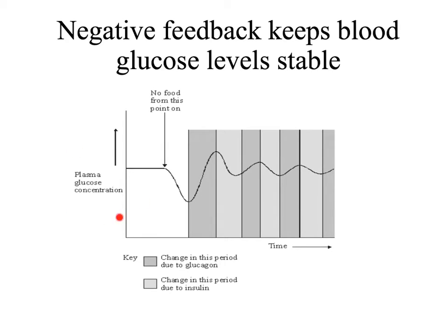If we look at how blood glucose concentration changes during a day, we can see that if blood glucose levels fall too low, this leads to the secretion of glucagon and blood glucose levels increase. If blood glucose levels go too high, this leads to secretion of insulin, causing blood glucose to fall again. So blood glucose levels don't stay constant — they fluctuate within normal levels over the course of the day, depending on your level of activity and what you eat.